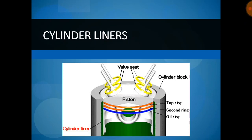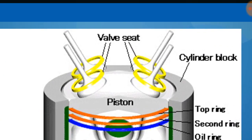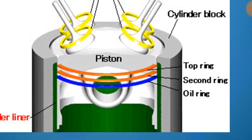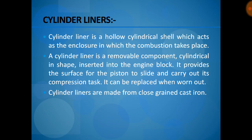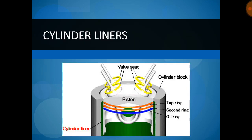Welcome to Engineering Study Materials. Today we are going to discuss cylinder liners. A cylinder liner is a hollow element present between the piston and cylinder. It is an important element which encloses the piston to perform the combustion reaction — the four strokes or two strokes of a cycle. It is a hollow cylindrical shell acting as an enclosure in which combustion takes place. It is a removable component, cylindrical in shape, inserted into the engine block, providing the surface for the piston to slide and carry out its compression task.